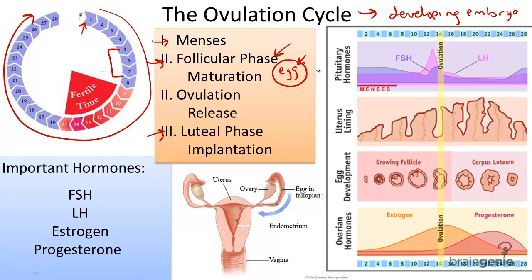An important hormone called FSH, follicle stimulating hormone, is released by the anterior pituitary gland in the brain. Think FSH as egg development or maturation. This also happens with the help of a hormone called estrogen, which is released by the ovaries to help the egg mature as well.